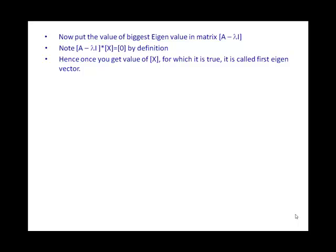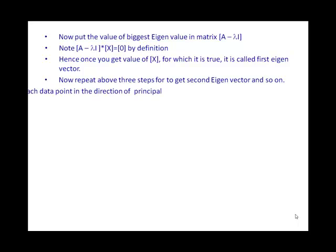To get the second eigenvector, substitute the second eigenvalue into the (A − λI) matrix and solve the equation again — the result is the second eigenvector. Similarly, substituting the third eigenvalue gives the third eigenvector, and so on for each subsequent eigenvalue.